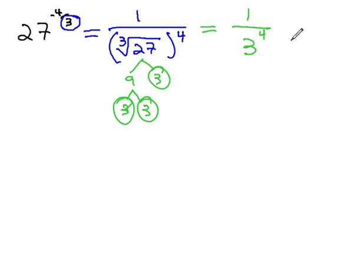We still have the 4th power, so now the expression reads 1 over 3 to the 4th power. 3 to the 4th power is 81, and we've simplified our expression. 27 to the negative 4 thirds is equal to 1 over 81 for our final solution.